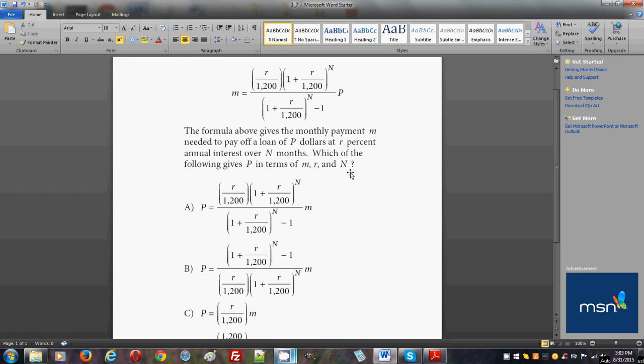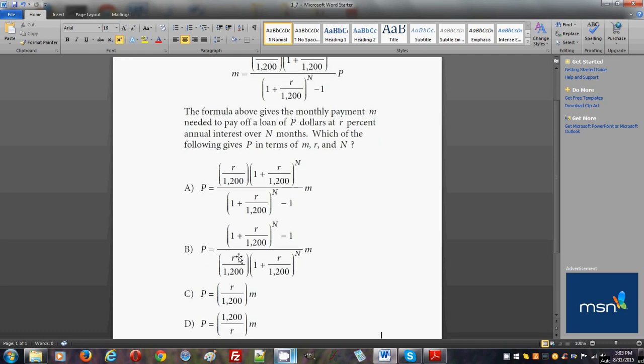Express p in terms of m, r, and n. We need to isolate it, so we will have to divide the left side, which will be m times this denominator here, by the numerator. Let's find this numerator in the denominator.